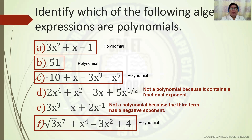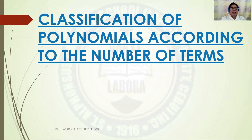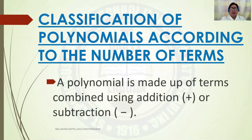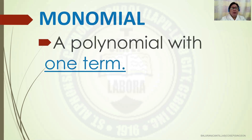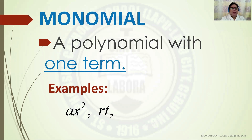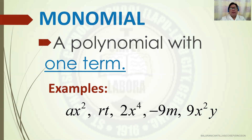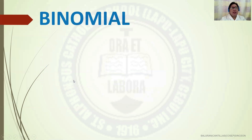Do you have questions? If there is none, let's proceed. Let us have the classifications of polynomials according to the number of terms. A polynomial is made up of terms combined using addition or subtraction. The first classification is monomial. A monomial is a polynomial with one term. Examples: ax squared, rt, 2x to the exponent of 4, negative 9m, and 9x squared y.